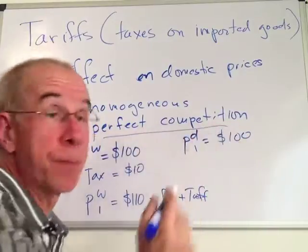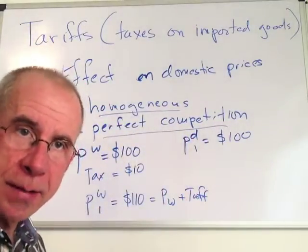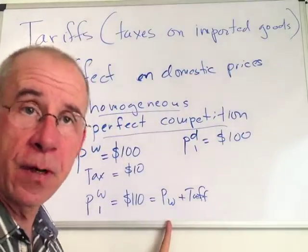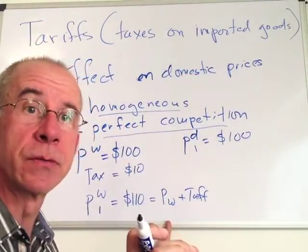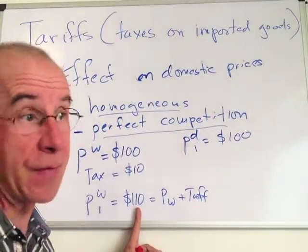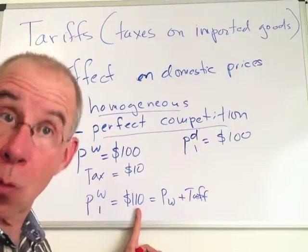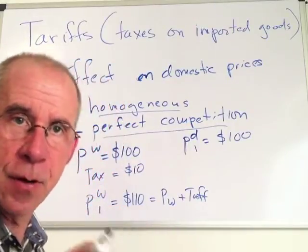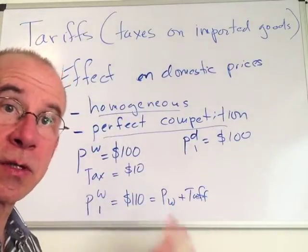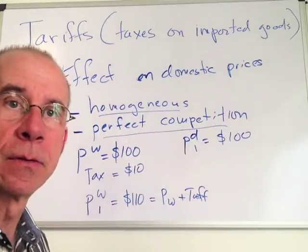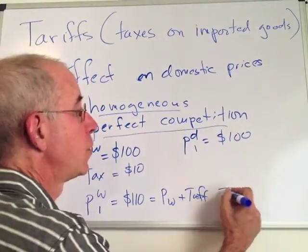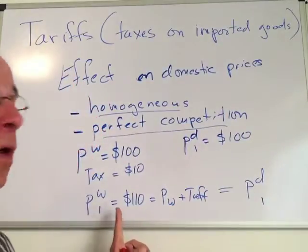Because we're talking about perfect competition and homogeneous goods, this process by which the domestic price tends to rise works in a very particular way. Every domestic firm — small firms in this perfectly competitive market — will have no reason not to charge the full $110. If they charge $108 they'd sell more, but in perfect competition small competitors can sell all they want at the market price anyway. So the sensible thing is to charge $110, the equivalent of the world price plus the tariff. The new domestic price will be $110 as well.